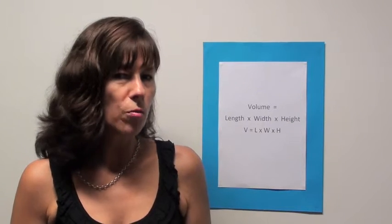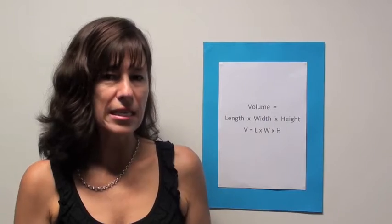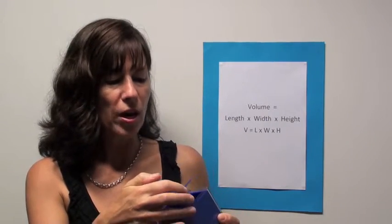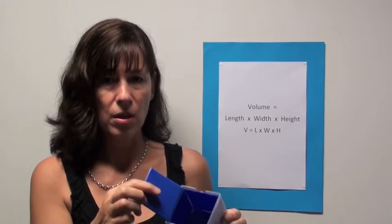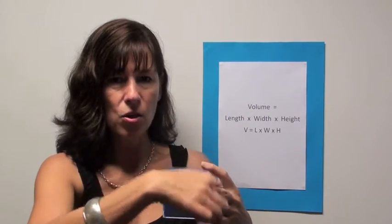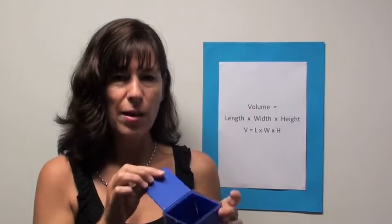Now we're looking at the volume of a solid or a 3D shape. To find the volume of a solid, we want to find how much area or space is inside that shape. And the formula to do this is length times width times height or depth. And that will tell us how much space or area is inside the 3D shape.